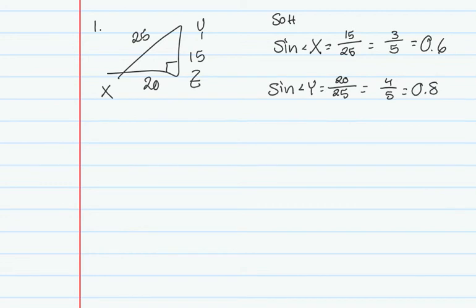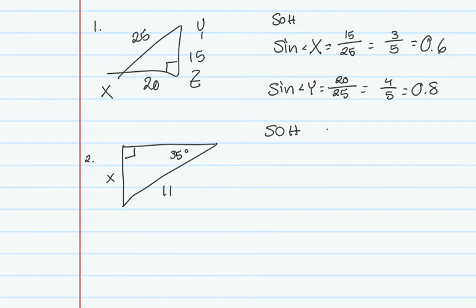We can also solve for a side length using sine or cosine. Given 35 degrees and sides X and 11, according to the angle I have the side opposite and the hypotenuse. Using SOH-CAH-TOA, since I have opposite and hypotenuse, I'll use sine.